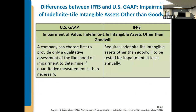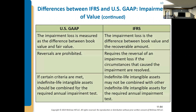Under GAAP, you can choose to first do a qualitative assessment to figure out if there's a likelihood of impairment. Under IFRS, they test annually regardless, if it's an indefinite-life asset other than goodwill. As far as valuation, the impairment loss under GAAP is the difference between book value and fair value; under IFRS, it's the difference between book value and the recoverable amount. Under GAAP, once you mark it down you cannot mark it back up. However, under IFRS, if circumstances change and there wasn't actually an impairment, you can mark it back up to value.